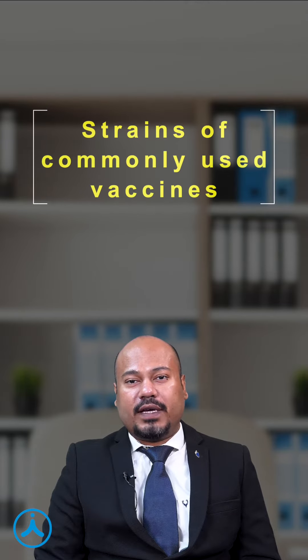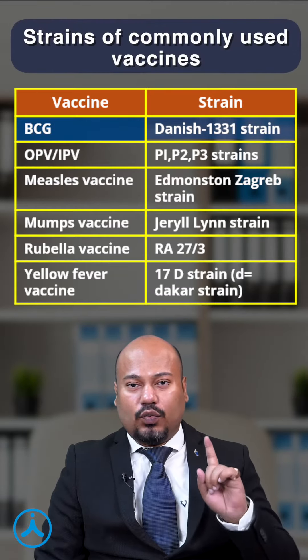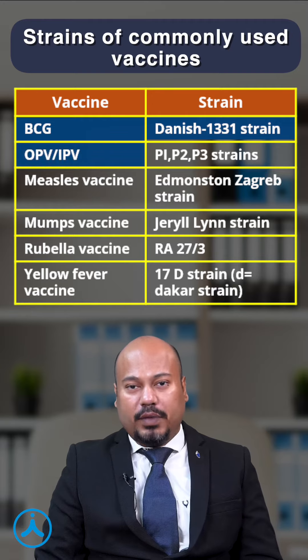What are the strains of commonly used vaccines? BCG uses the Danish 1-3-3-1 strain. OPV or IPV uses the P1, P2, and P3 strains.